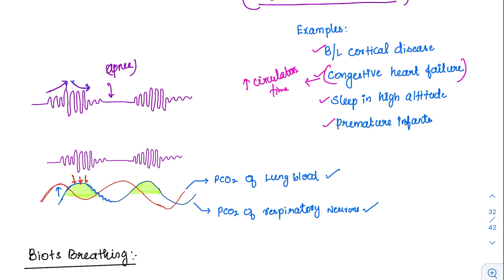So the person will start hyperventilating. Whenever he is hyperventilating, what happens to the carbon dioxide levels? There is a carbon dioxide washout. If the carbon dioxide is washed out, there is no stimulus for respiration. So after this, there will be a severe carbon dioxide washout.